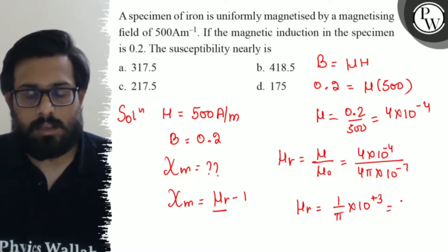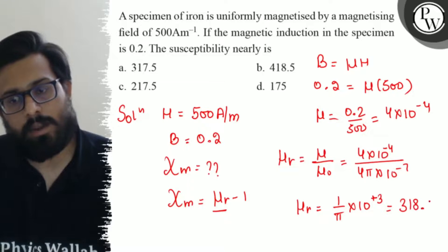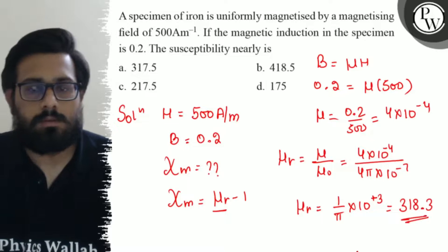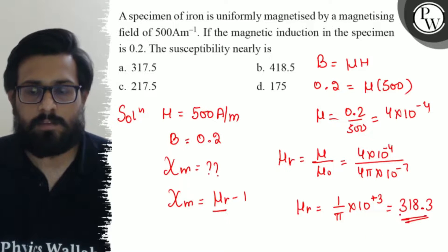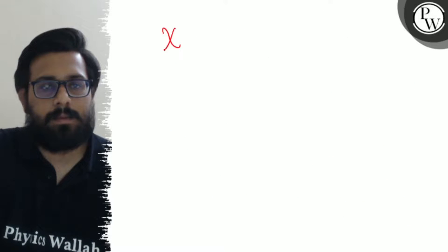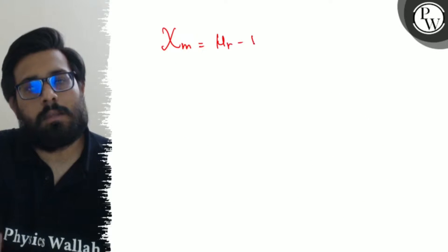Solving further, we get μR = 318.3. We know that magnetic susceptibility χm = μR - 1.